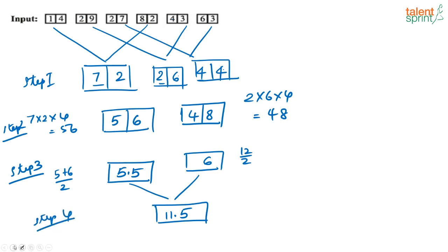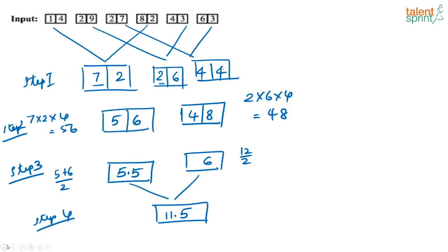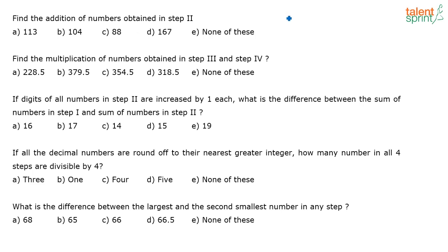The first question asks for the addition of the numbers obtained in Step 2. Step 2 gives 56 and 48, so 56 + 48 = 104. The correct answer is option B.